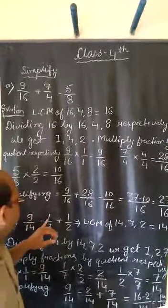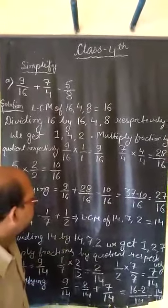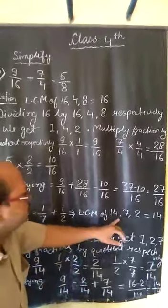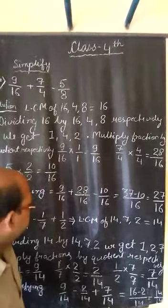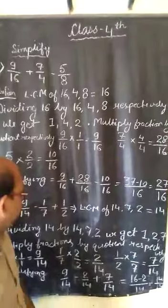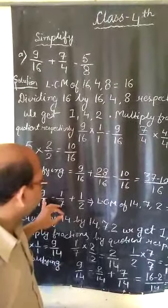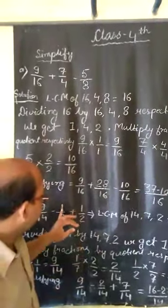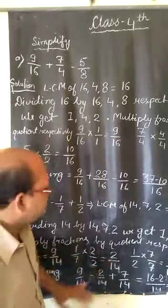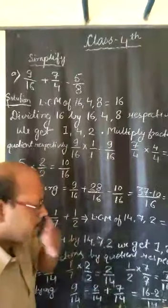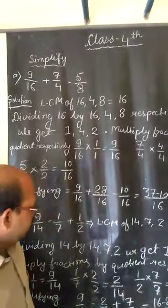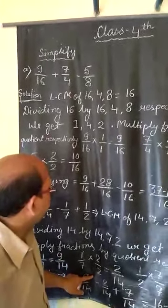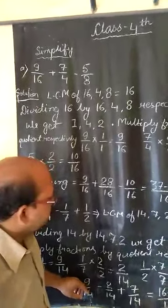In the second question: 9 upon 14 minus 1 upon 7 plus 1 upon 2. The same process will take place. First, we find the LCM of 14, 7, and 2. The LCM of 14, 7, and 2 is 14. After getting the LCM, we make like fractions. Multiplying 9 upon 14 by 1 on both sides, we get 9 upon 14. Multiplying 1 upon 7 by 2 on both sides, we get 2 upon 14. Multiplying 1 upon 2 by 7 on both numerator and denominator, we get 7 upon 14. So all three fractions become like fractions with denominator 14.